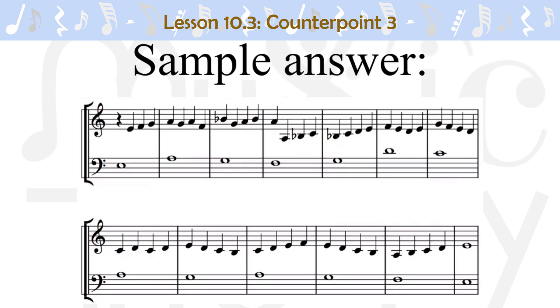The next measure has a dissonant passing tone on the 3rd beat. The 2nd to last measure is a scale upward with a dissonant on the 2nd beat. The counterpoint ends with a perfect octave in the last measure.